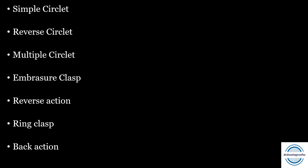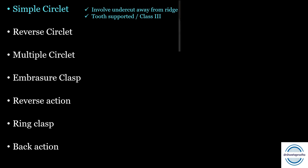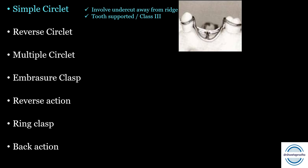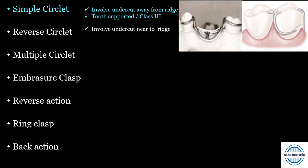Types of circumferential clasp assemblies — very important for MCQs: simple circlet, reverse circlet, multiple circlet, embrasure clasp, reverse action, ring clasp, and back action. The simple circlet is a straightforward circumferential clasp involving the undercut away from the ridge, mainly given in tooth-supported or Kennedy Class 3 cases. The reverse circlet is the reverse — it involves the undercut near to the ridge, given in distal extension (Kennedy Class 1 and 2) cases, approaching from the mesial aspect to engage the distobuccal undercut.